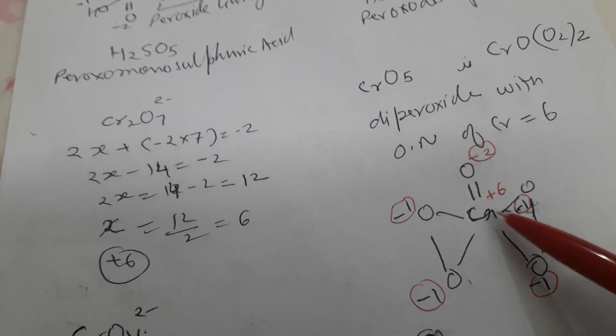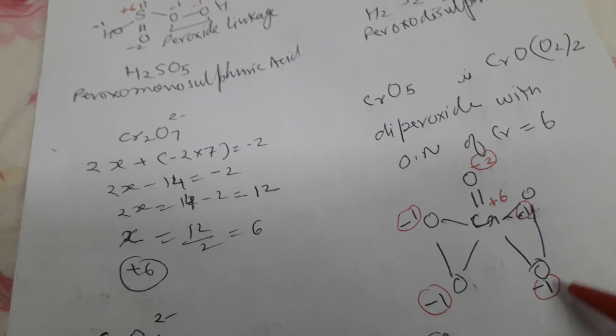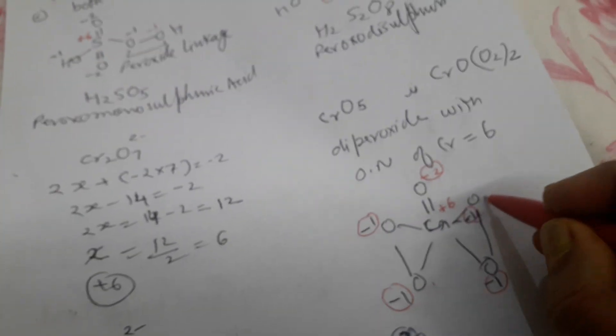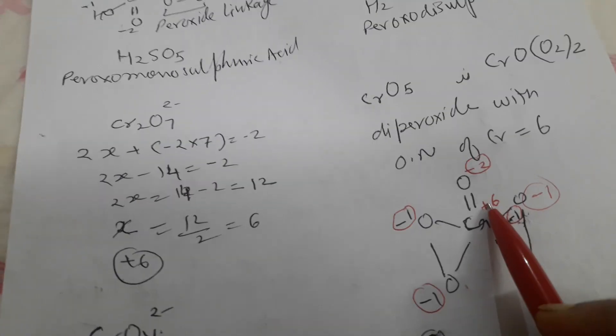And CrO₅, here also 2 peroxide linkage here: 1, 2, 3, 4, 4 negative. So this is having also plus 6 oxidation state.